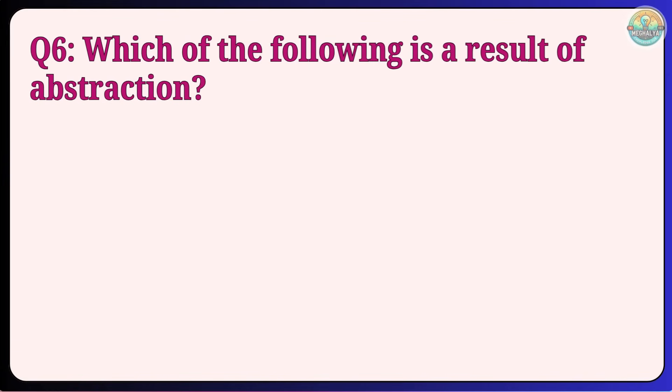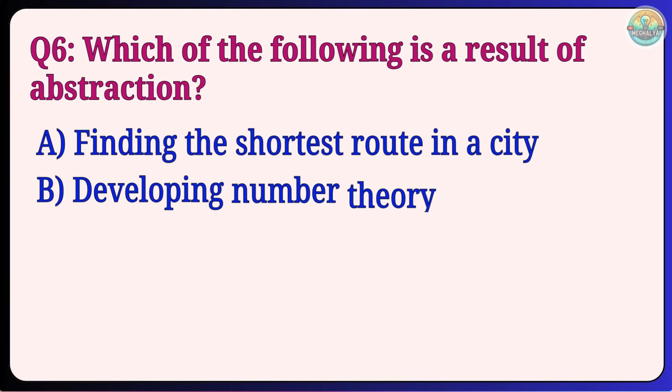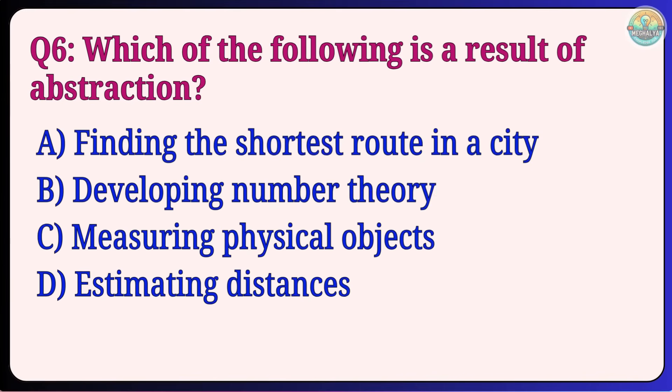6. Which of the following is a result of abstraction? Finding the shortest route in a city, Developing number theory, Measuring physical objects, Estimating distances. Answer: B, Developing number theory.